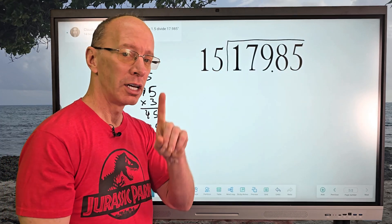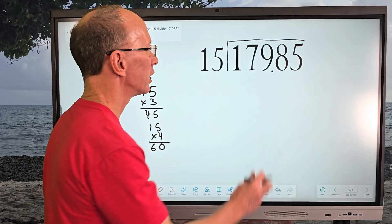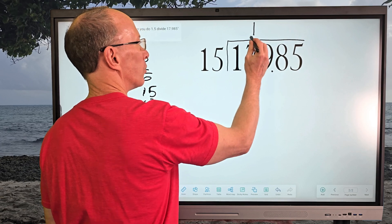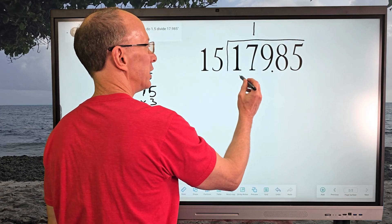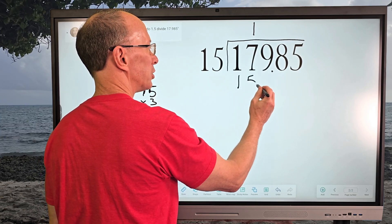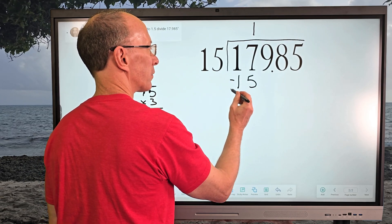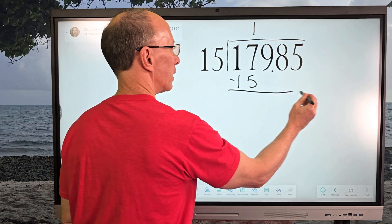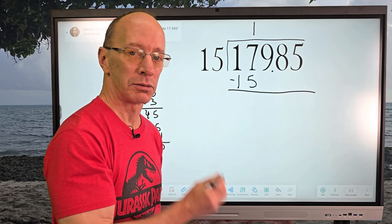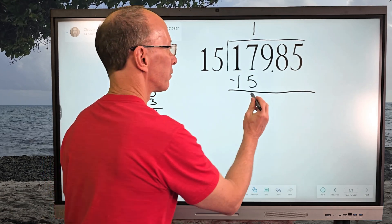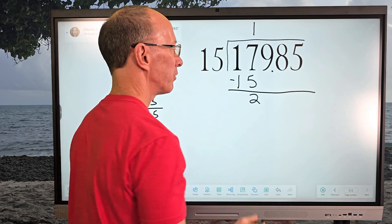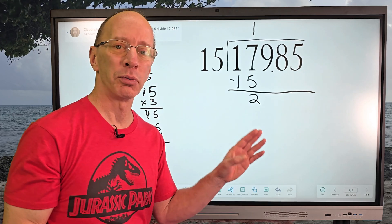So I'm going to go ahead and put the 1 right here. 1 times 15 is 15. I subtract: 7 minus 5 equals 2, and 1 minus 1 equals 0. Our next step is to bring the next number down, which would be the 9, so I bring it straight down right here.